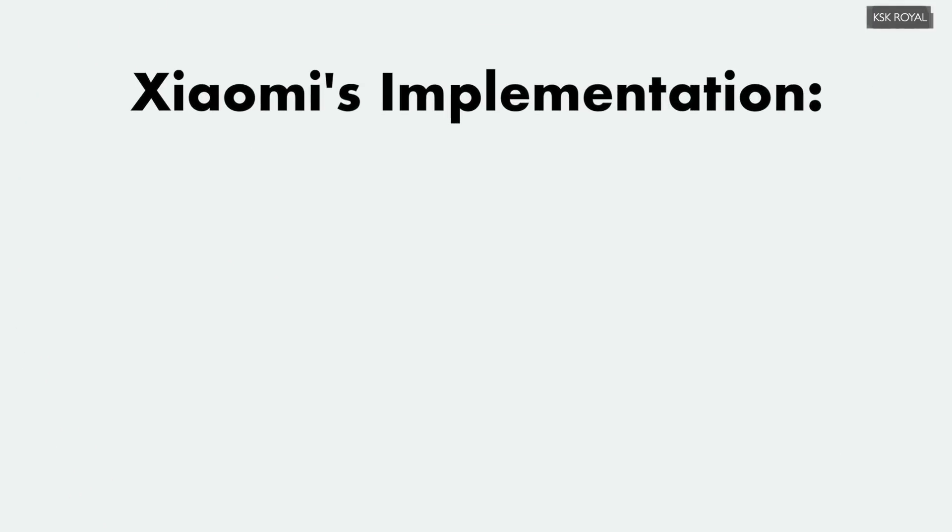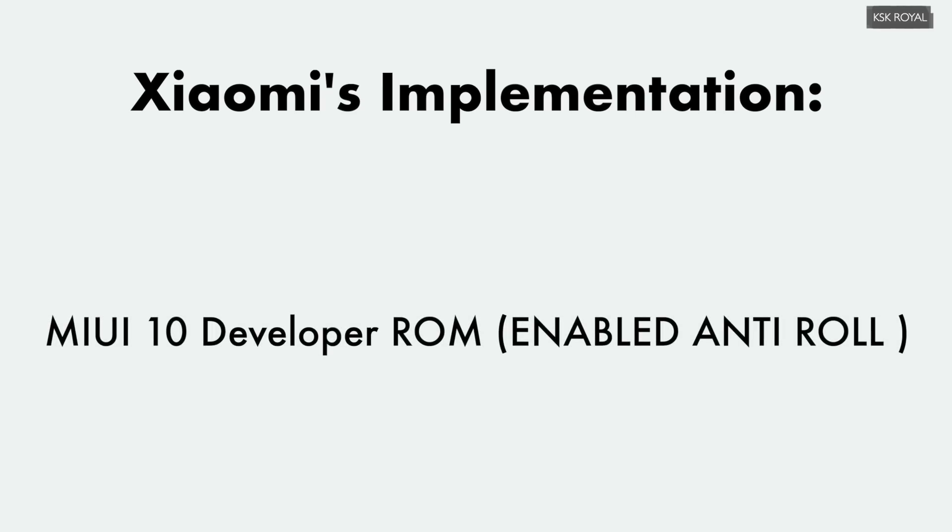Let me go deeper into Xiaomi's implementation. Let's say you're on a MIUI 10 stable ROM and at some point you decide to install a MIUI 10 developer ROM. Once you install a developer ROM with anti-rollback protection enabled, you may not be able to downgrade back to MIUI 10 stable ROM using the fastboot method. But with the help of TWRP, you can — however it may not perform any checks, it may flush the build, and you may end up breaking your device.